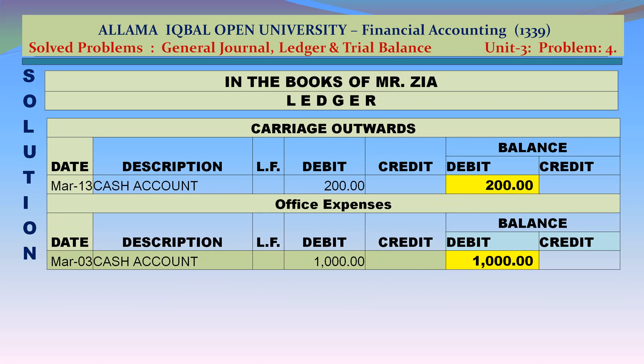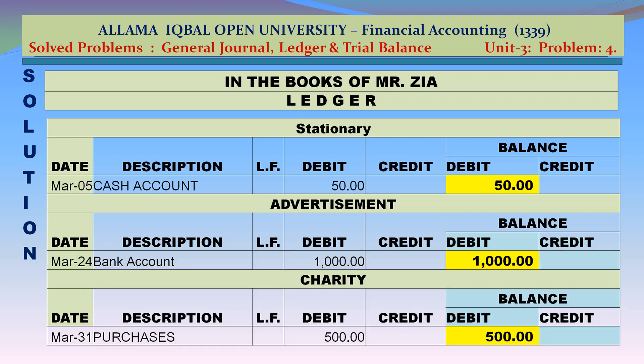Carriage outwards: debit — cash account March 13 Rs 200. Closing balance: Rs 200 debit. Office expenses: debit — cash account March 3 Rs 1,000. Closing balance: Rs 1,000 debit. Stationery account: debit — cash account March 5 Rs 50. Closing balance: Rs 50 debit. Advertisement account: debit — bank account March 24 Rs 1,000. Closing balance: Rs 1,000 debit.